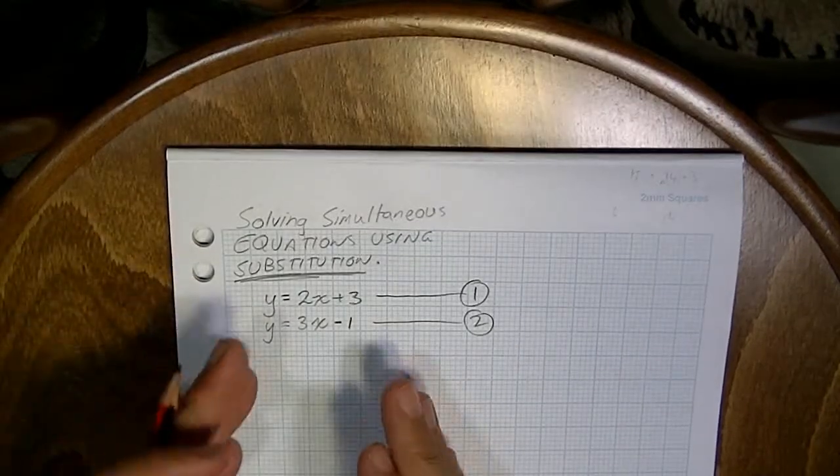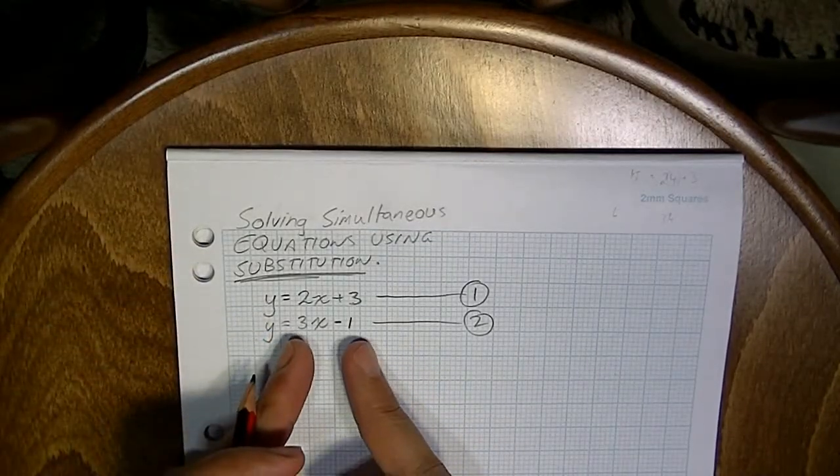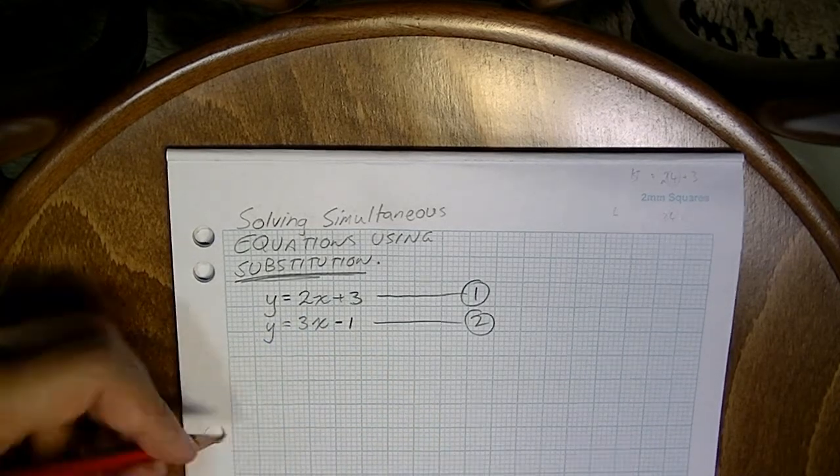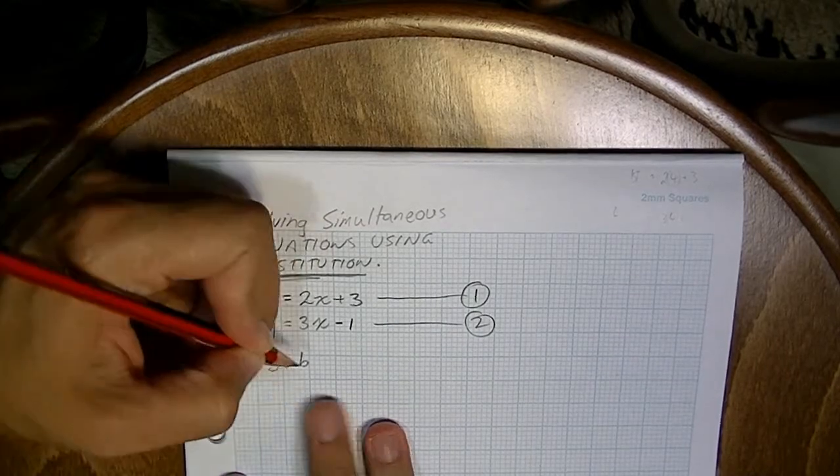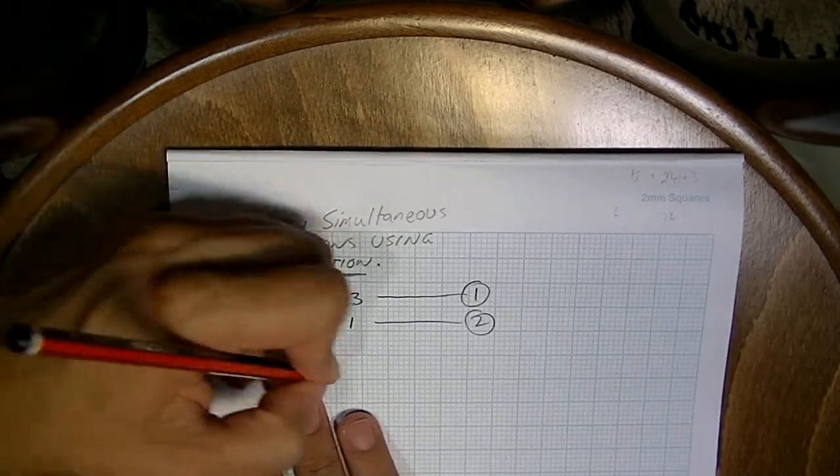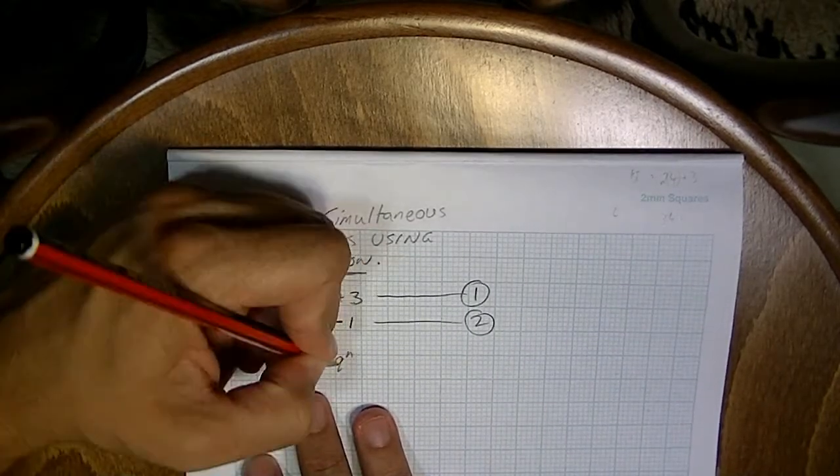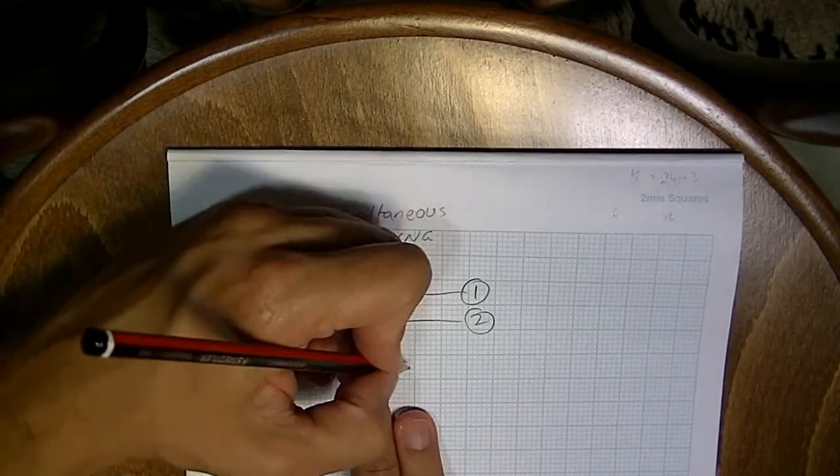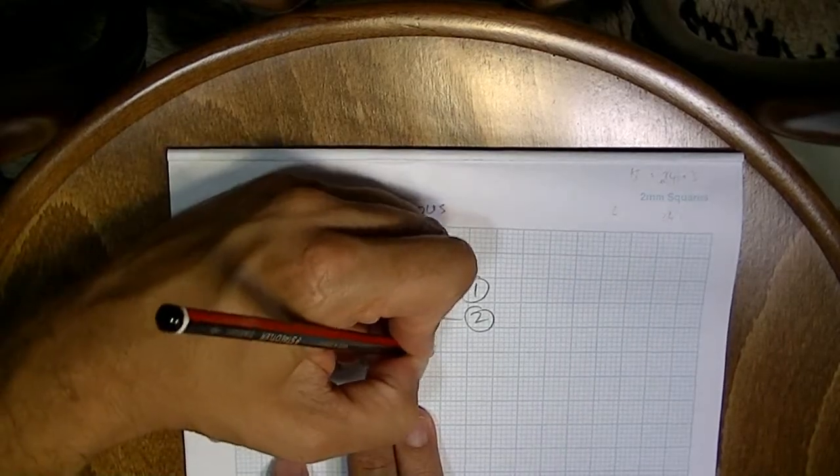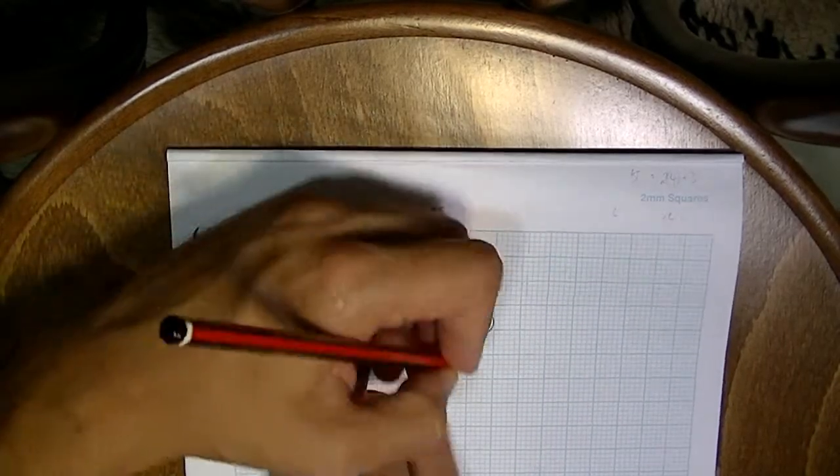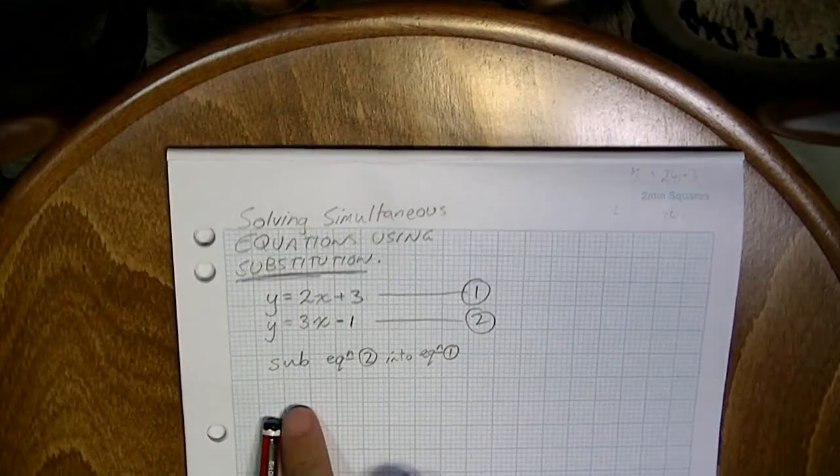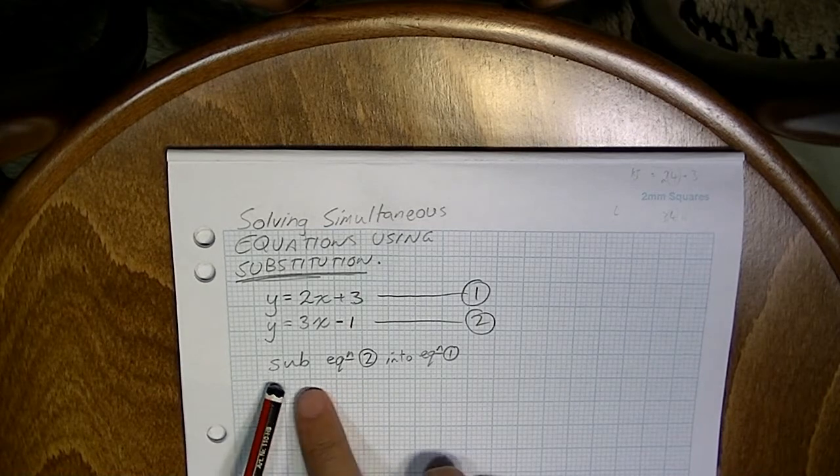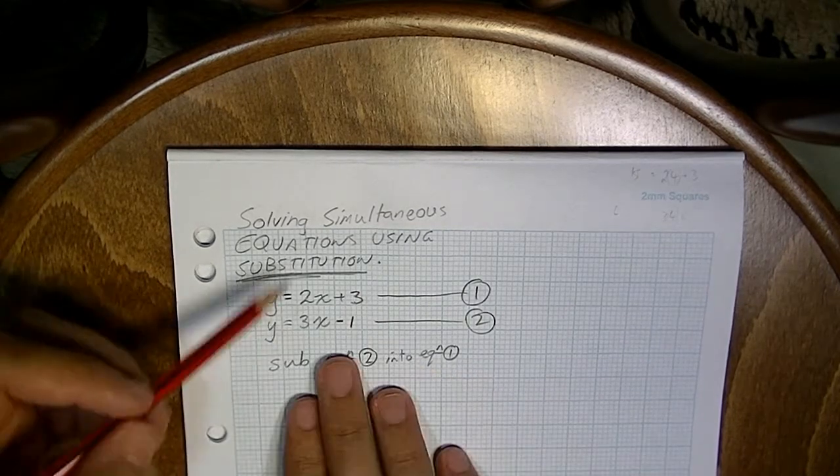Now, substitution means that we're going to take a full equation and substitute it into the other equation. So I'm going to write something here like this. Sub, short for substitute, equation 2 into equation 1. Now you really want to write this because otherwise this next line doesn't make sense. You've got to tell us what you're doing. Sub equation 2 into equation 1.